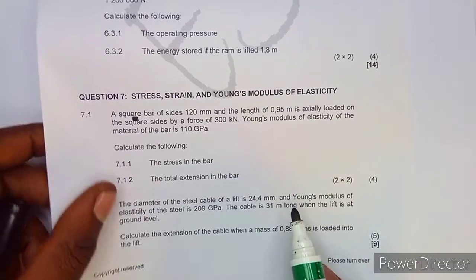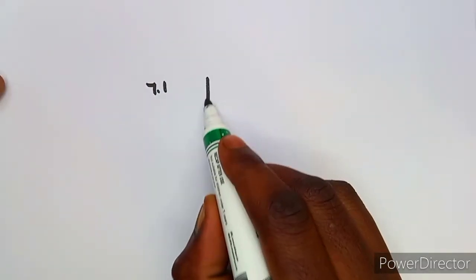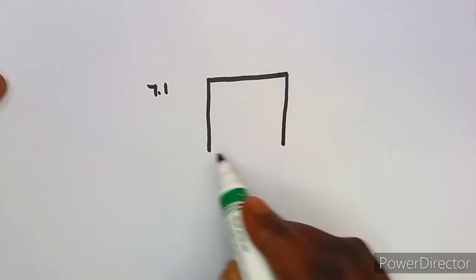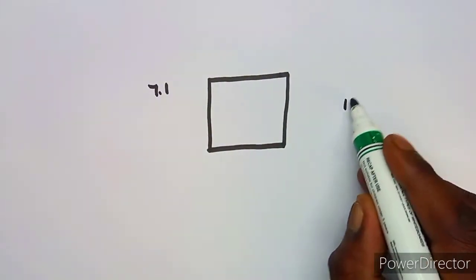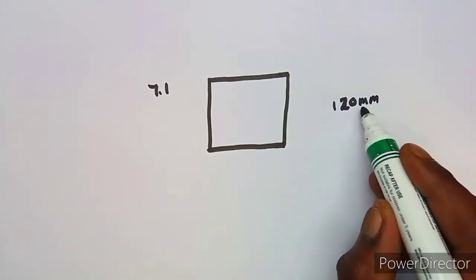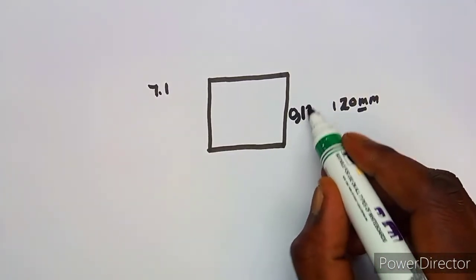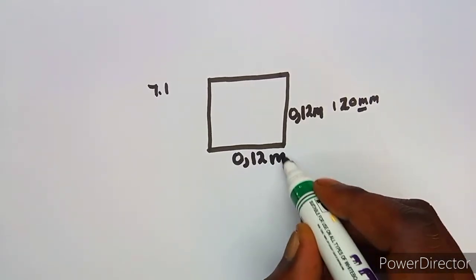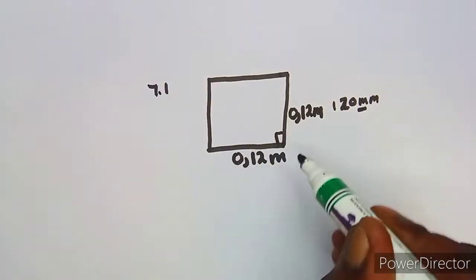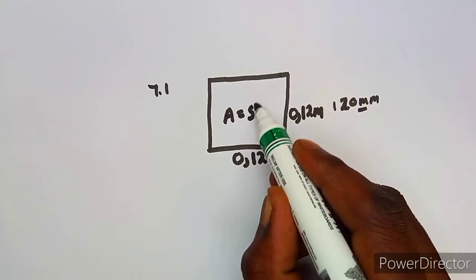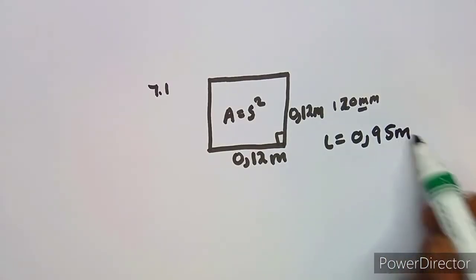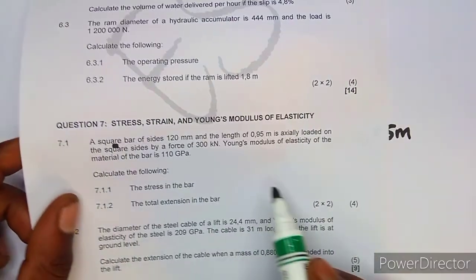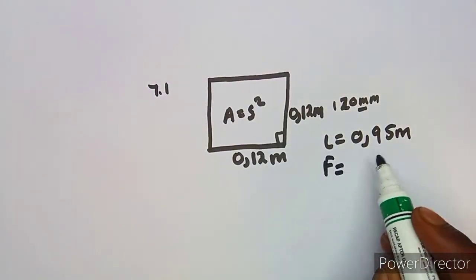Let's put this into consideration. We have a square where all sides are equal, so this is 120 millimeters. In meters, you divide by 1000, giving 0.12 meters. The area of a square is side times side, or side squared. We are also given the length of 0.95 meters and the force of 300 kilonewtons.